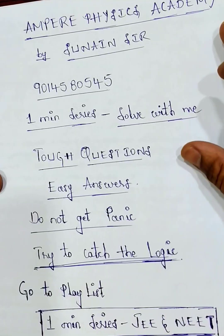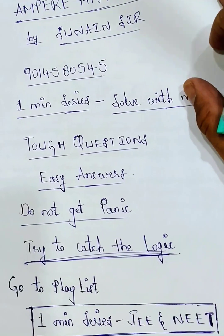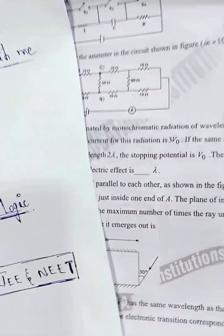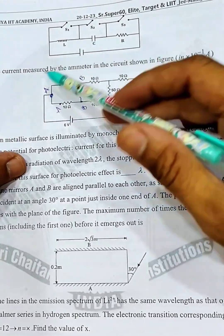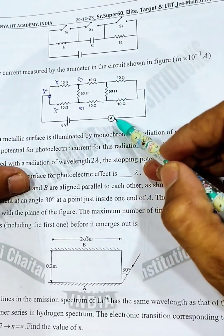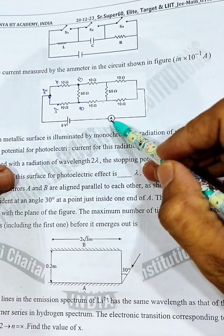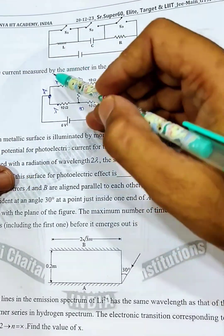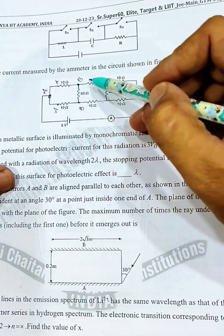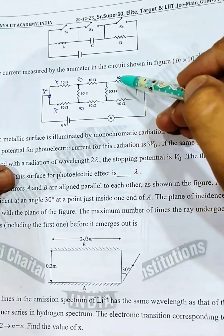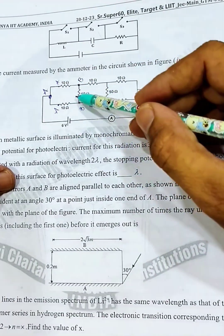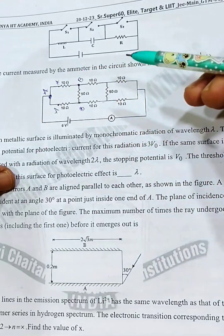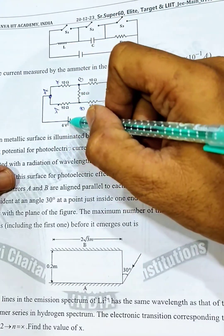Let's go through these tough questions which have easy answers. If you want more videos, go to the playlist 'one minute series.' I am going to take previous year questions. Here we have a circuit where we need to find the current through the ammeter. We have two 10-ohm resistors, two 10-ohm resistors, two 10-ohm resistors, and some 50-ohm resistors.